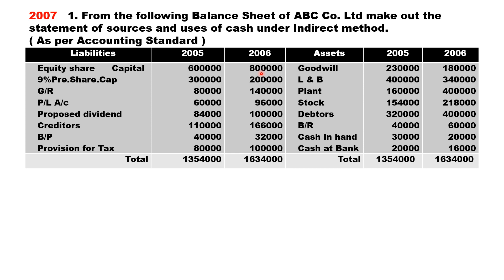Nine percent preference share capital comes under finance activity — last year three lakh, current year two lakh, a decrease of one lakh, called redemption of preference shares. General reserve (GR) comes under operating activity — last year eighty thousand, current year one lakh forty thousand, an increase of sixty thousand, called GR transfer.